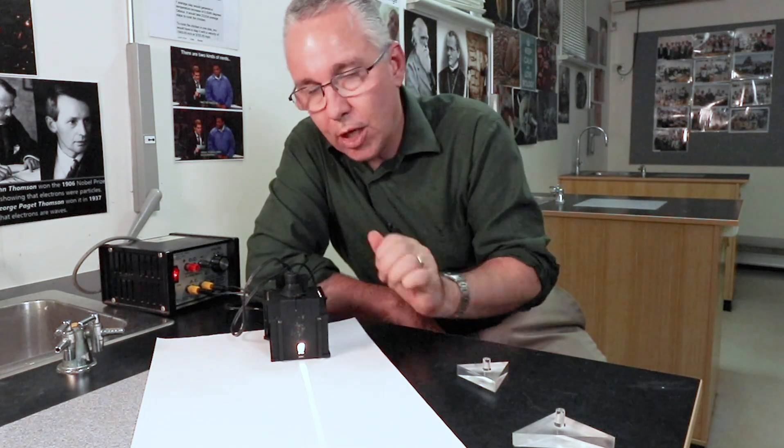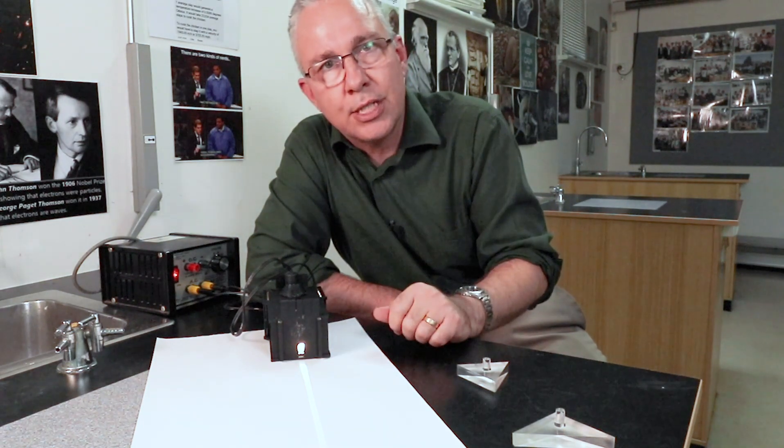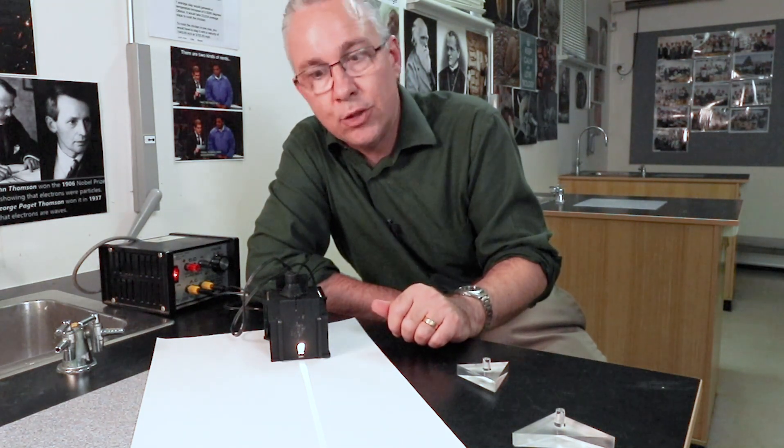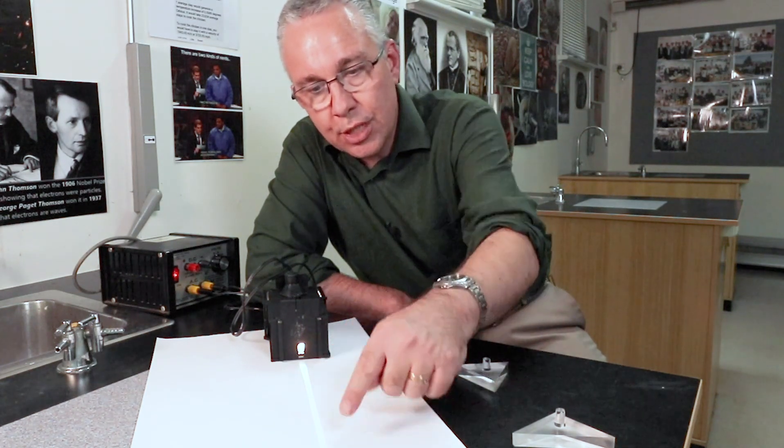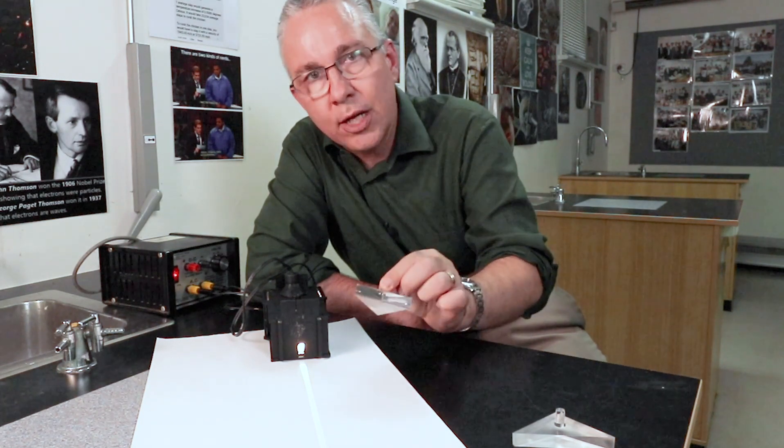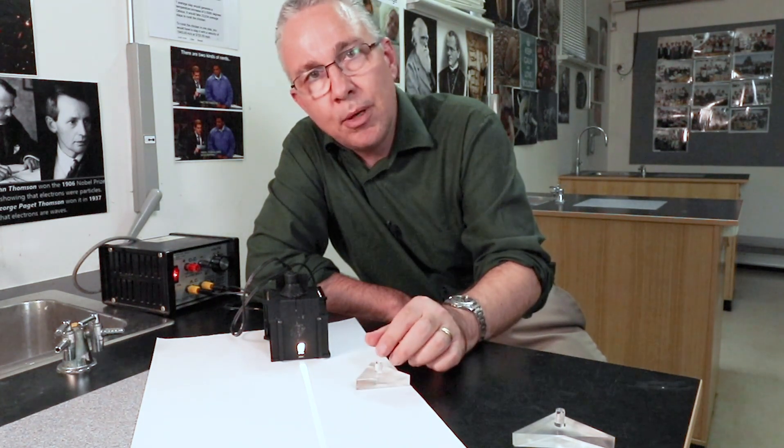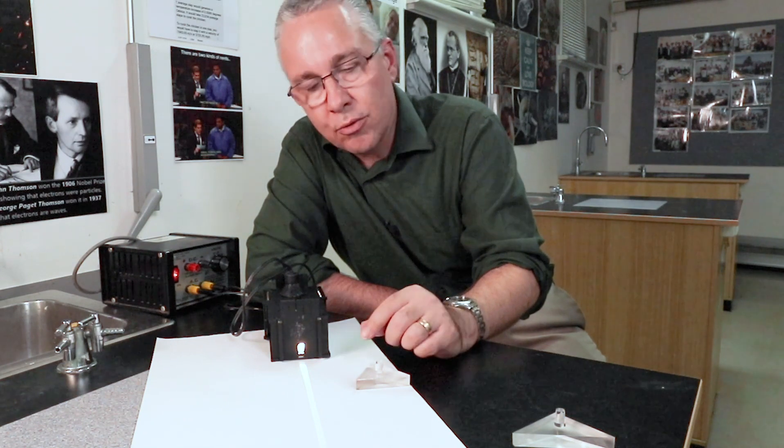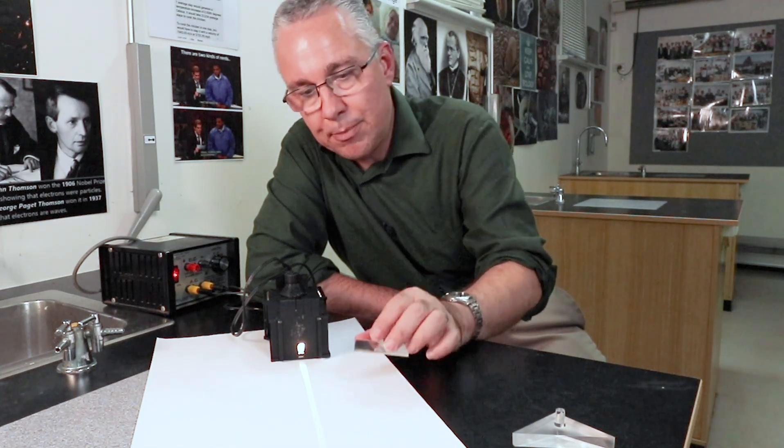Here I have a light ray coming out of my Hodgson light box and this Hodgson light box is a common instrument found in many schools and it produces nice straight beams of light. And what we're going to do is we're going to place this perspex triangle in front of it.